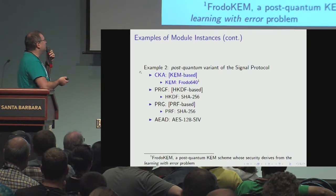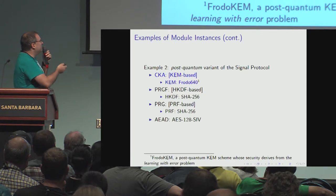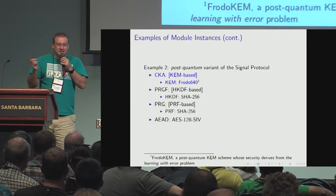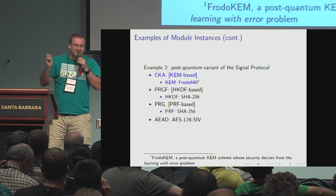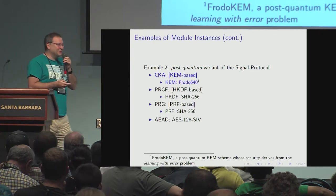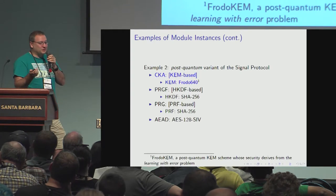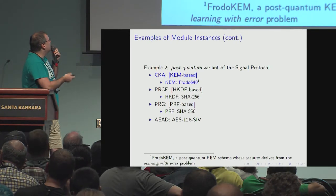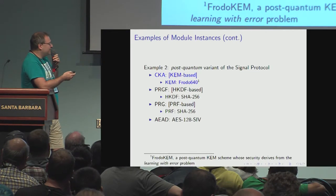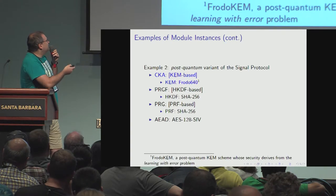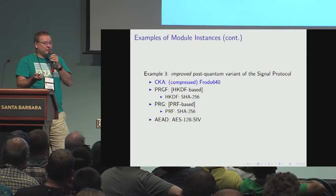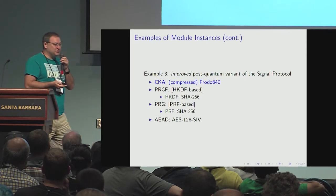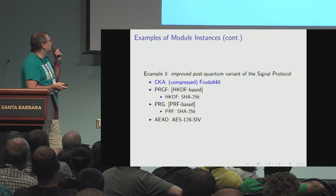We chose the simplest option — it's highly non-optimized — we chose Frodo, which is based on LWE. It's super simple and clean, but the ciphertext and public keys are long, so it's probably not the best choice for a practical deployment. Still, as a concept implementation it works. We then did something to optimize it: compressed Frodo, which saved about a factor of two in communications across all the parameters, which was kind of nice.